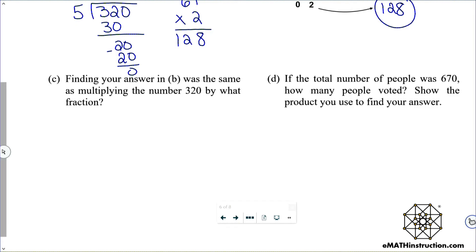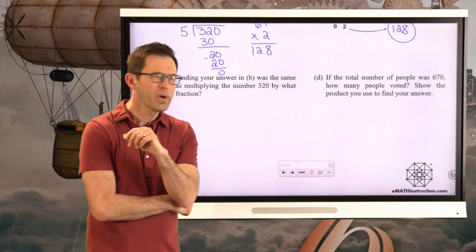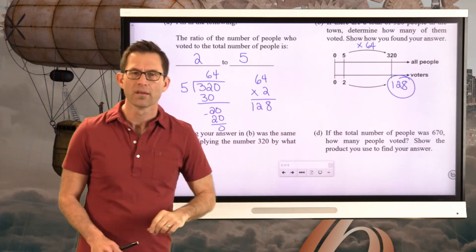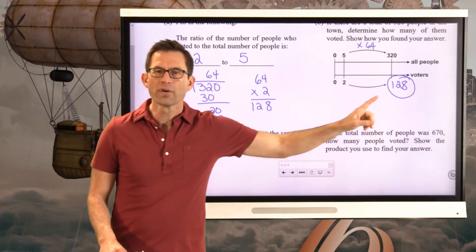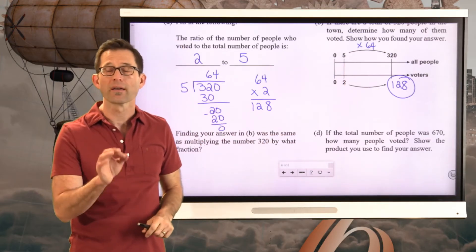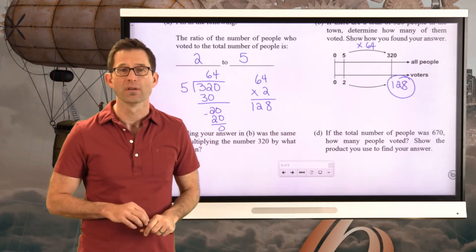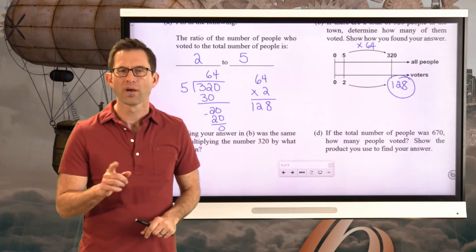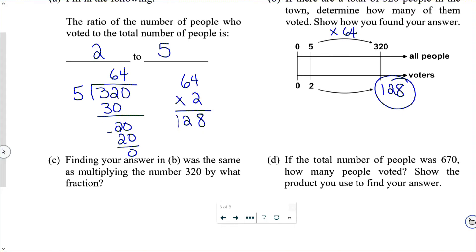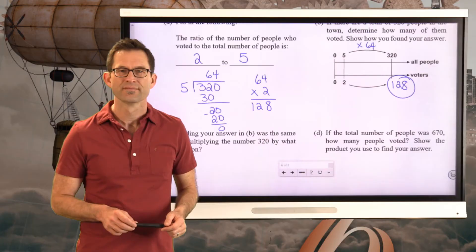Letter C. Finding your answer in B was the same as multiplying the number 320 by what fraction? So wait a second. Let's go back to this for a second. I don't see any fractions here. And yet, I could have found 128 by taking that 320 and multiplying by a single fraction. What would that fraction be? Pause the video now and see if you can figure it out.